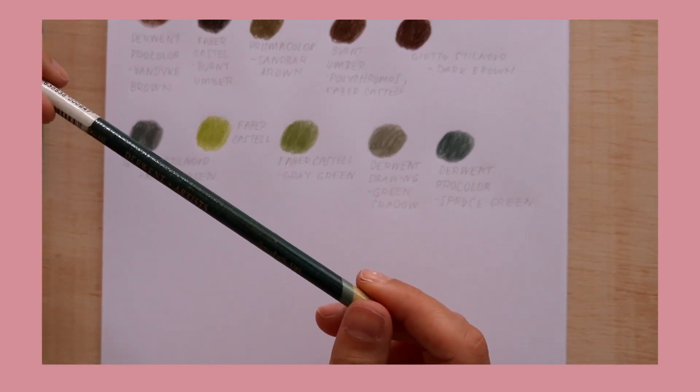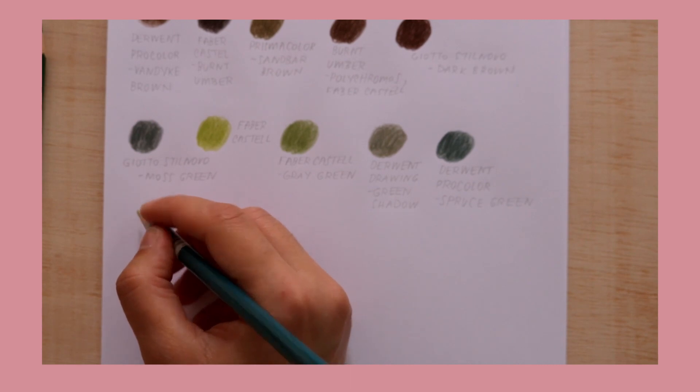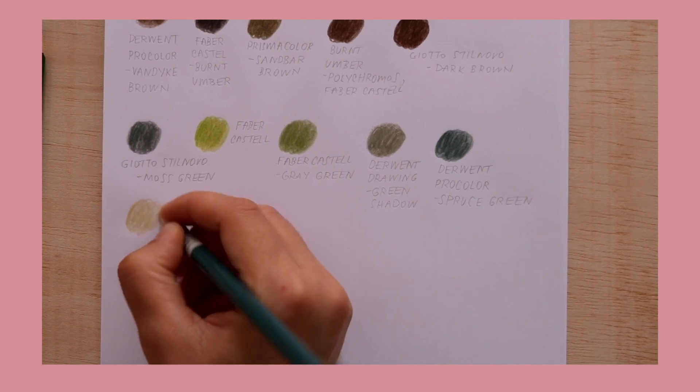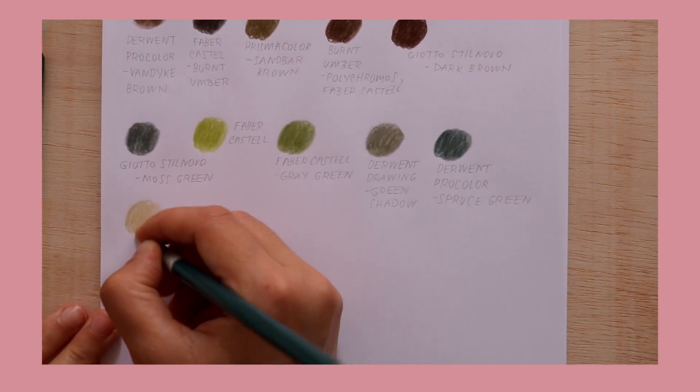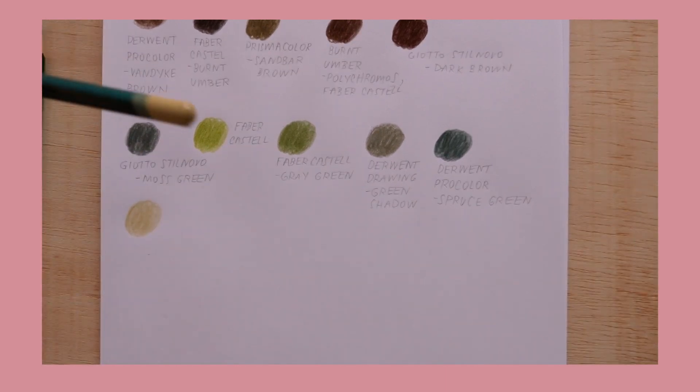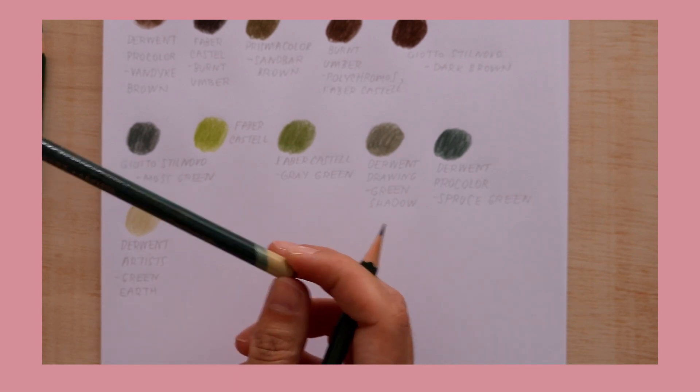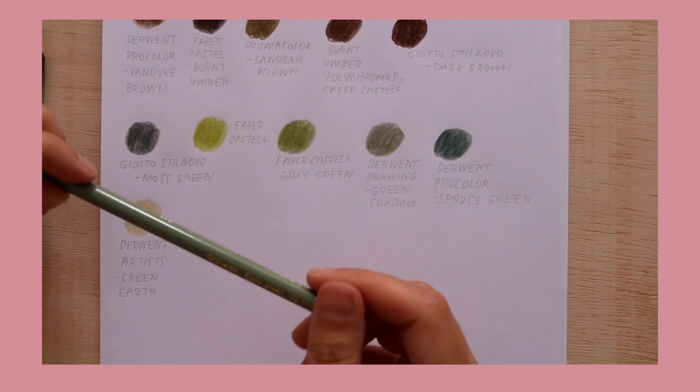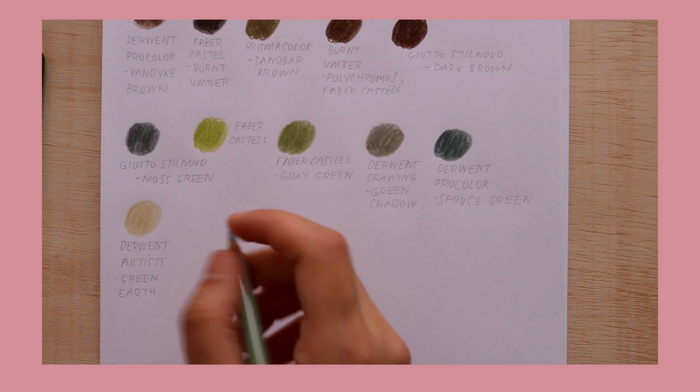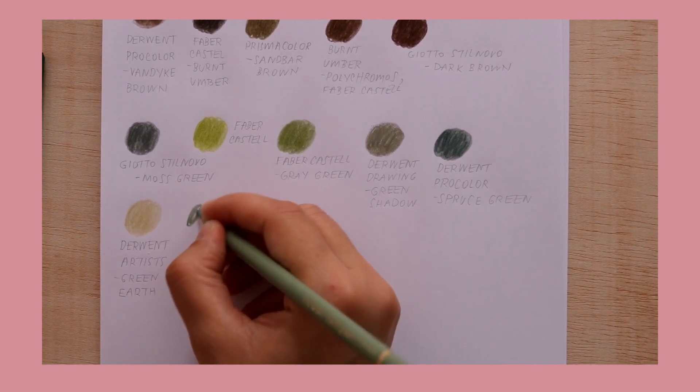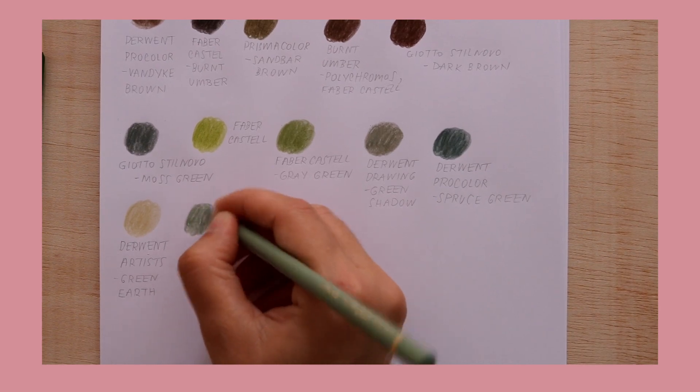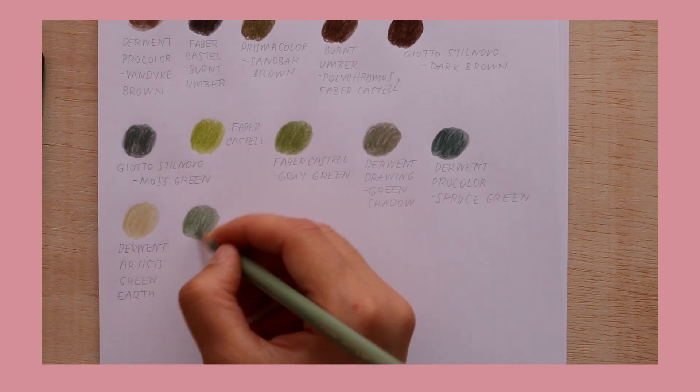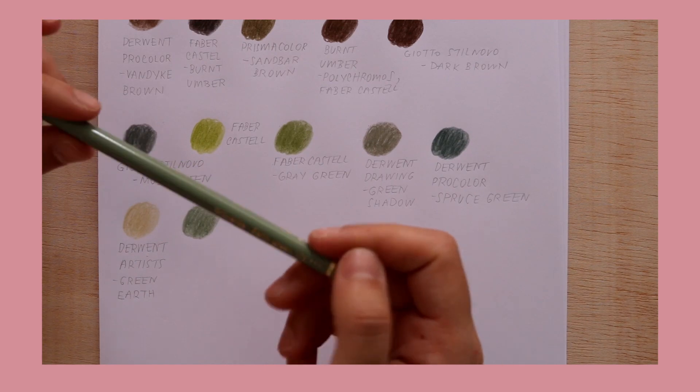And the last three. This one is Green Earth by Derwent Artists. It's to me more of a beige yellow than green, but I love it. I mean, I would use it as a beige color. Then Green Earth by Faber-Castell. Oh, this one has a little bit of blue and gray in it. And it's perfect, it's just perfect, this shade.